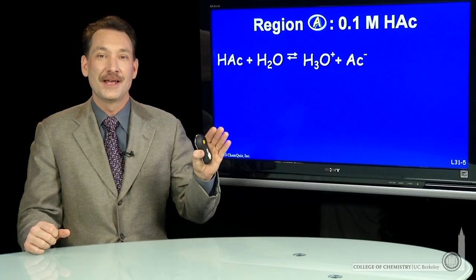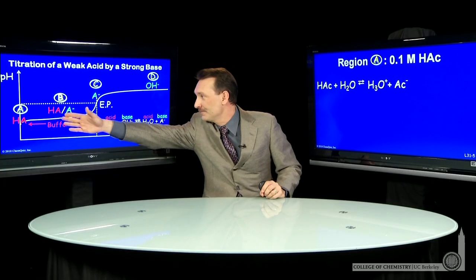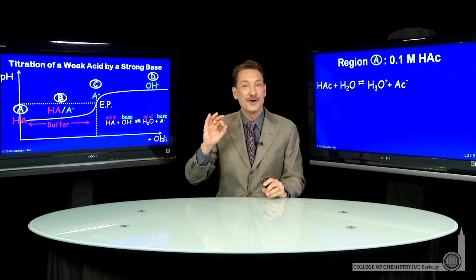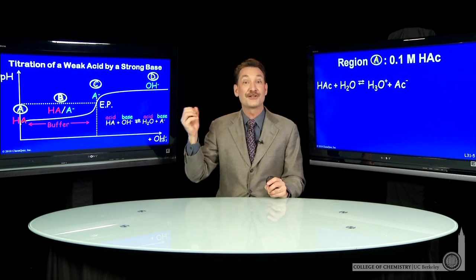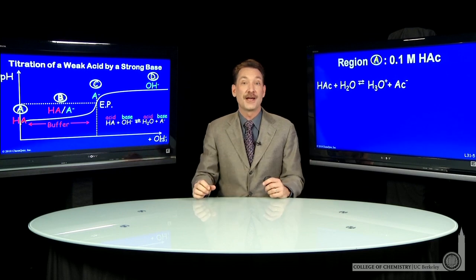Let's calculate the pH at a specific point on the titration curve. I'm going to go to point A in the titration curve, the very beginning, when I've added no base, and all I have is the solution of a weak acid. And we've actually done this before, but let's go through the calculation.